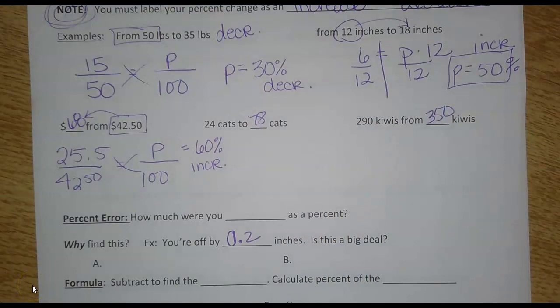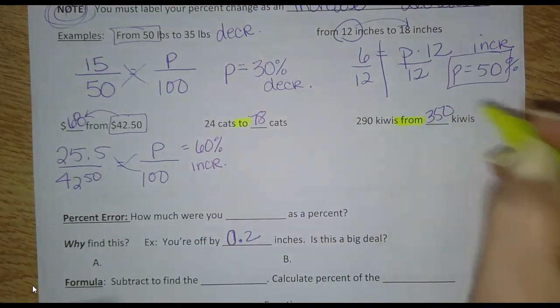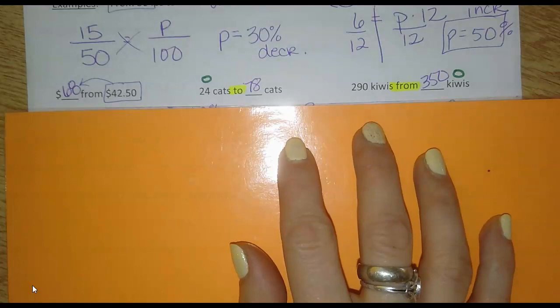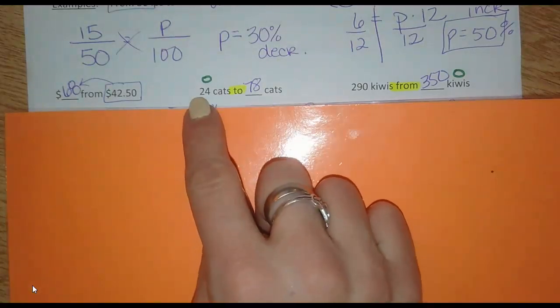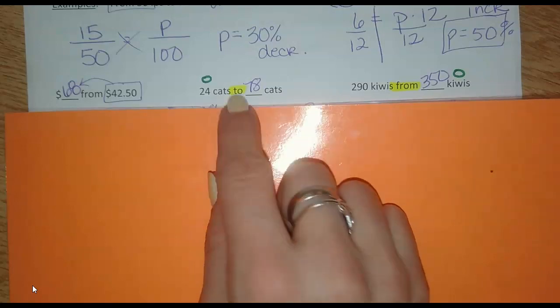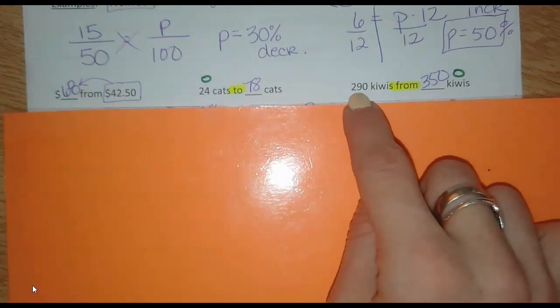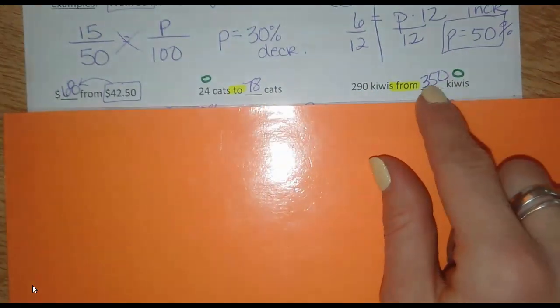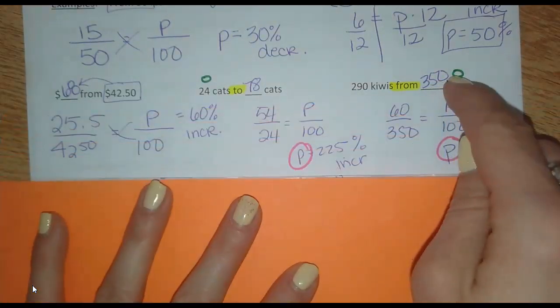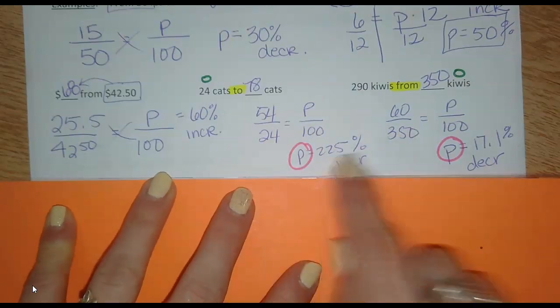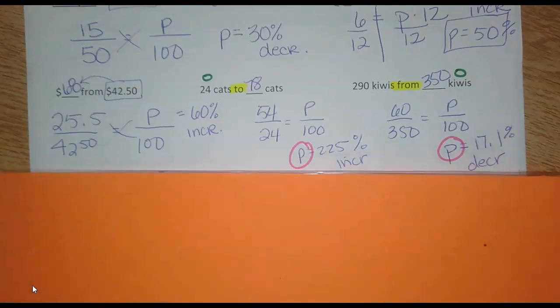So notice the difference here in the way it's worded. Think about which one is the original and which one is the new amount, because you have to have the original put down here in the bottom for the whole. Otherwise, it's going to be the wrong percent. So go ahead and pause and try those two. I just wanted to point out in this example, it starts at 24 and goes to 78, so 24 is the original here. It ends up at 290 and it came from 350, so 350 is the original. That makes a difference because the original is what should go here. So there's my answers, 225% increase, 17% decrease.